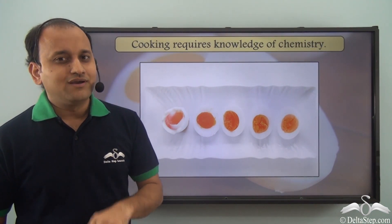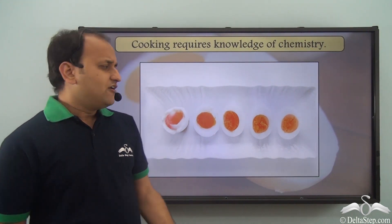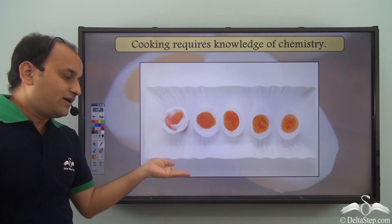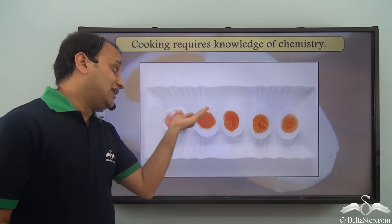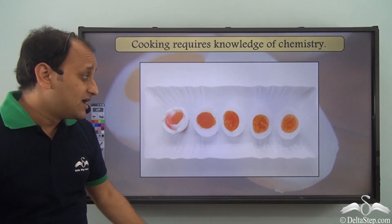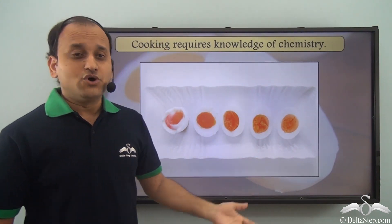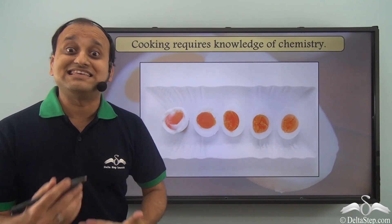Now you must be thinking how? Let's take a very common example of an egg. Now we eat egg in different forms. Sometimes we want a runny yolk. Sometimes we want a liquid yolk, and sometimes we want a soft yolk or maybe hard yolk. So how do we achieve all these different phases of the same egg?